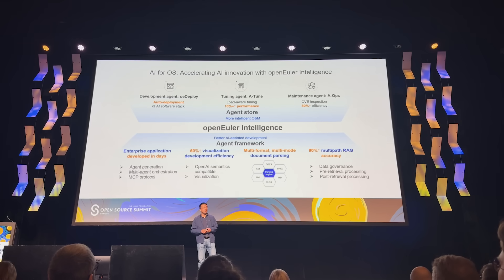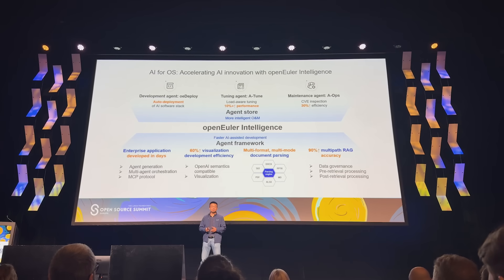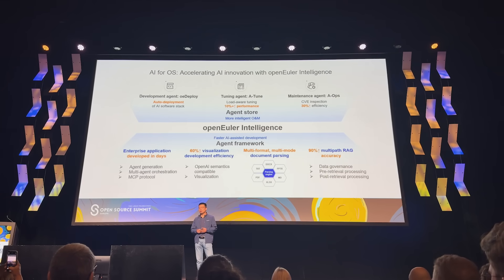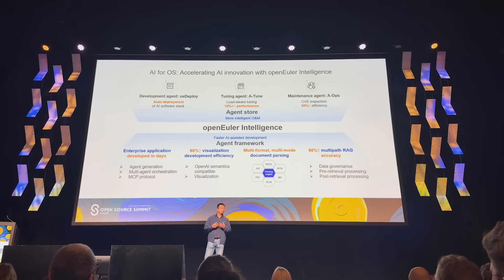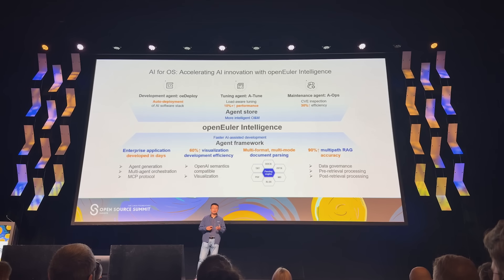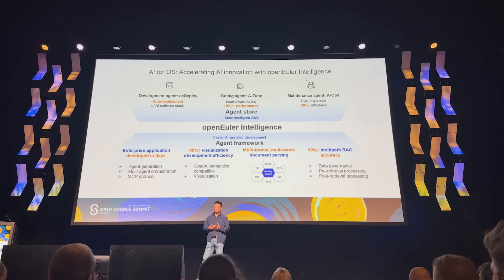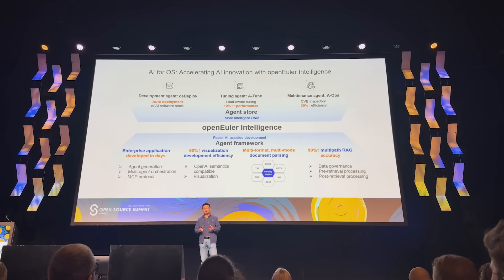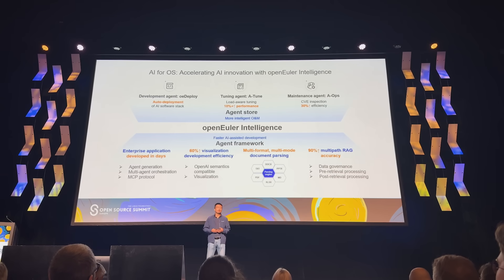For AI for OS, we have built several kinds of agents. For example, the OE development agent, OE deploy, can deploy the OS very easily. The tuning agent and maintenance agent — ATUNE and AOPS — use AI for performance tuning and maintenance. In OpenEuler, we have used AOPS for security inspection, and it can increase efficiency by at least 30%. All of these agent systems are powered by the AI agent framework. We built an AI agent platform called OpenEuler Intelligence, on top of which you can very easily develop your own AI agent system.